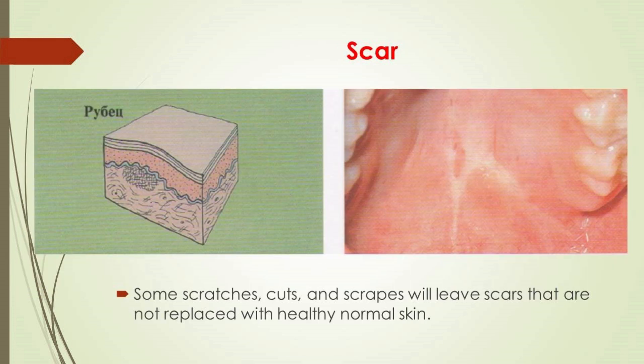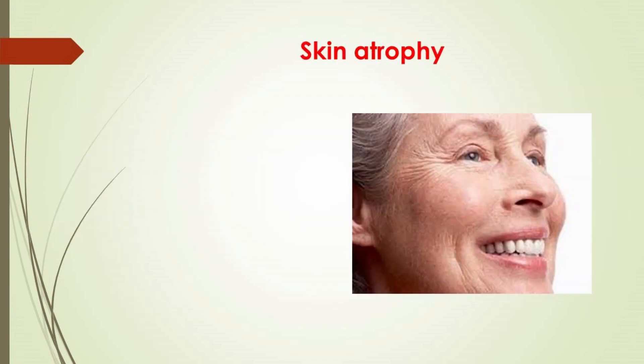Some scratches, cuts, and scrapes will leave scars where healthy skin is not restored; instead the skin returns as a scar tissue called a keloid. Skin atrophy occurs when areas of skin become thin and wrinkled from overuse of topical steroids or poor circulation.